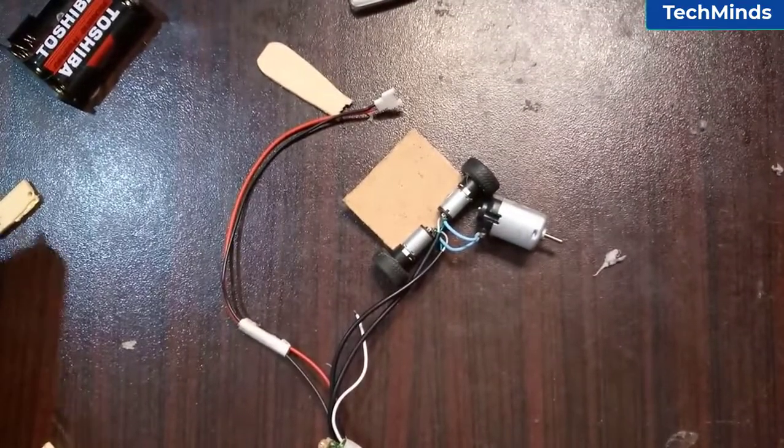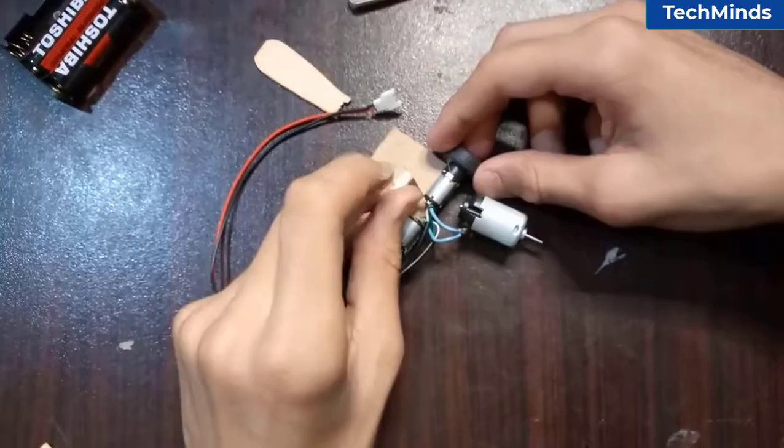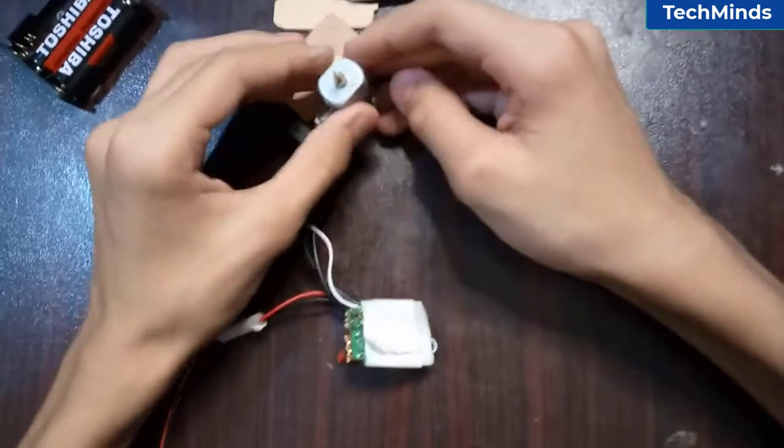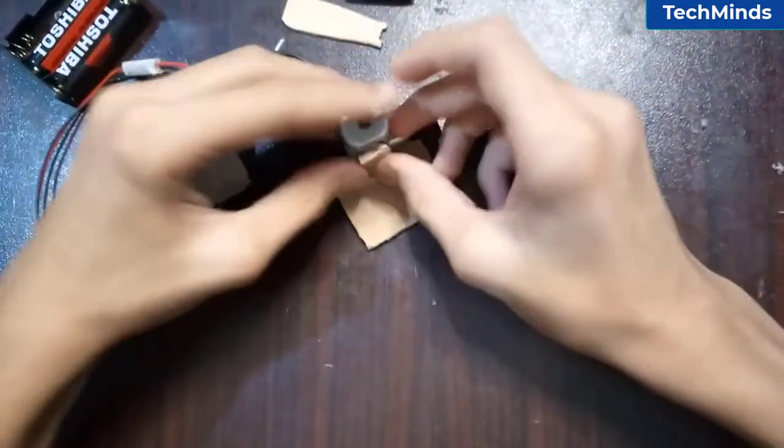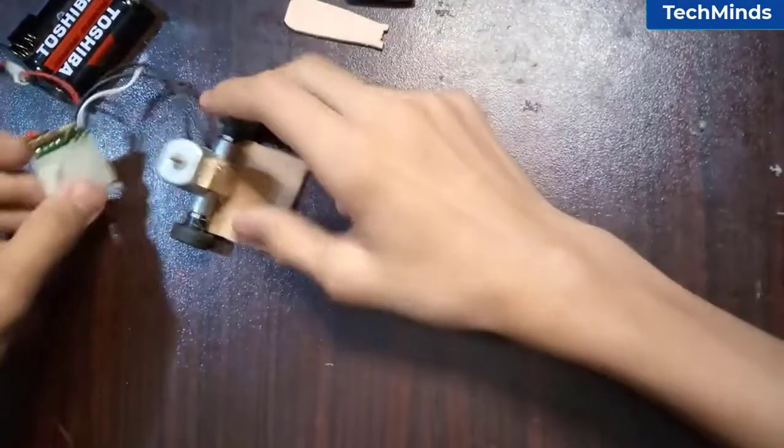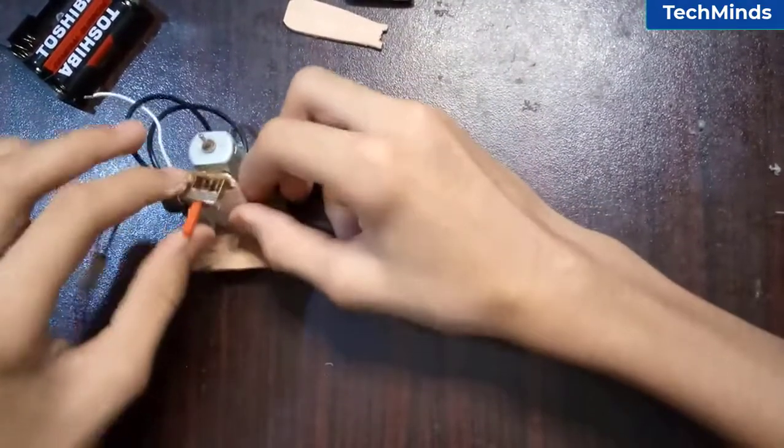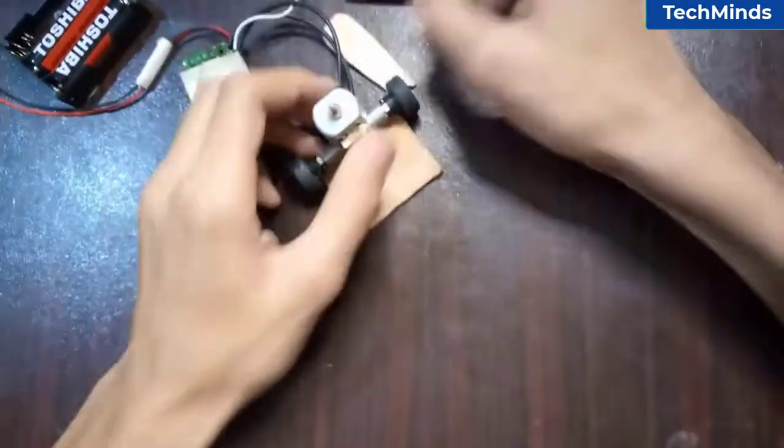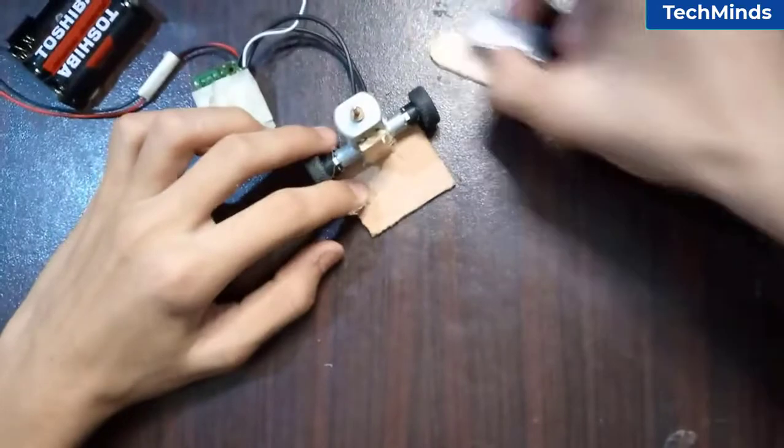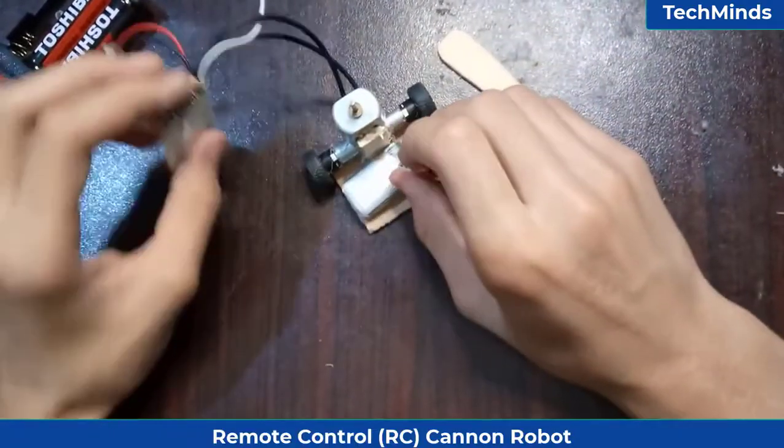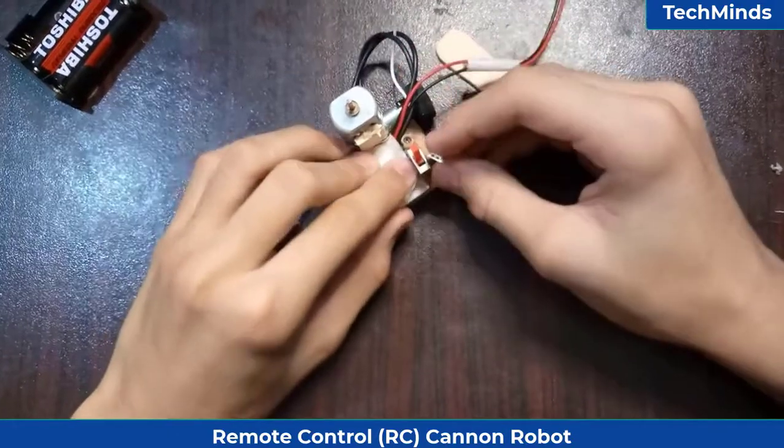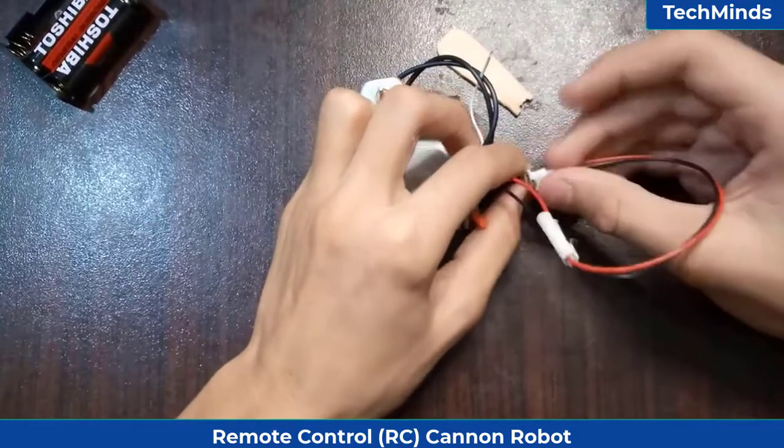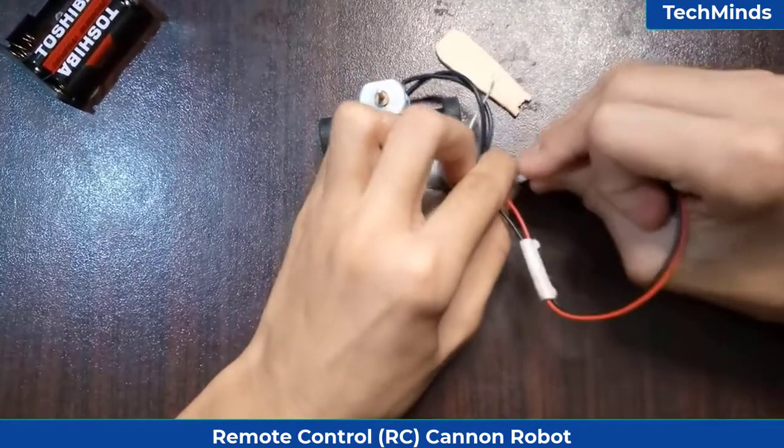So let's do this. This will go right here, and then the motor will go right here. The RC will go somewhere around here, and the battery will go right here. The RC will be on top of the battery. Let's connect the connector to the battery.